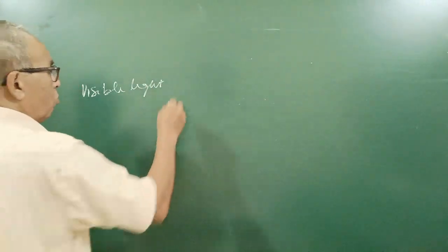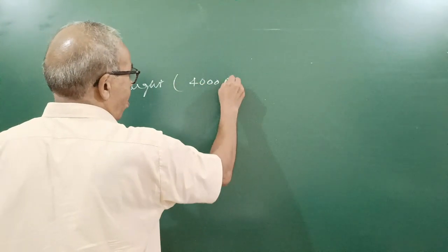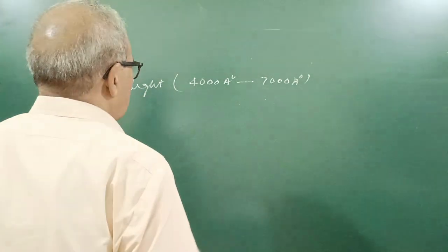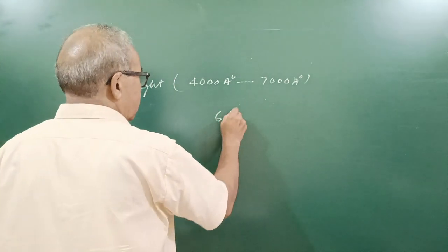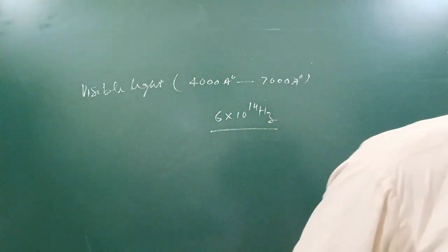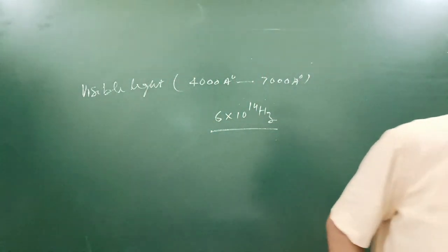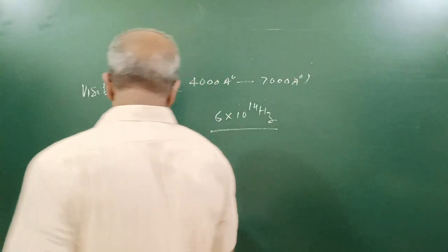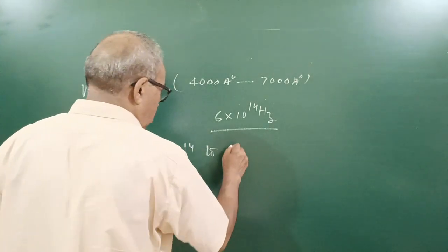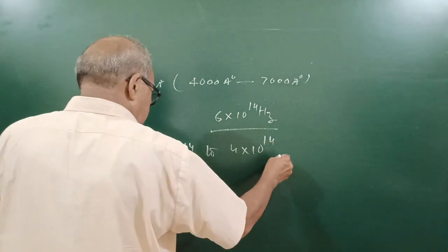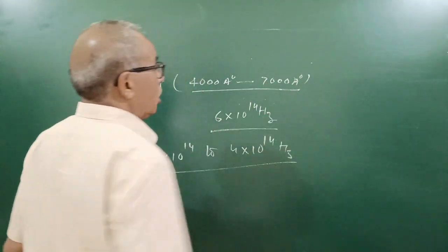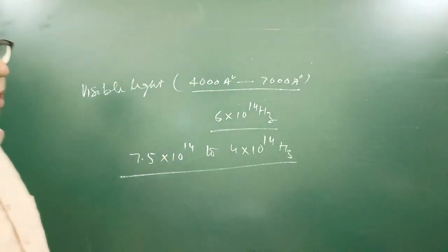So what is the source of visible light? Visible light, these are also electromagnetic waves. Wavelength 4000 angstrom to 7000 angstrom. Average frequency 5 into 10 to the power 14 hertz. Actually frequency is 7.5 into 10 to the power 14 to 4 into 10 to the power 14 hertz. Please remember the range of wavelength.